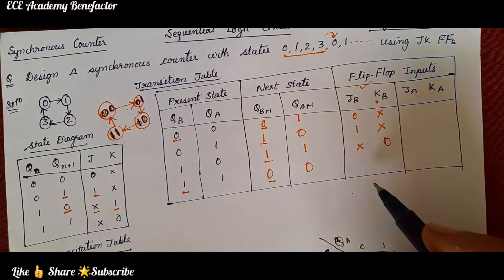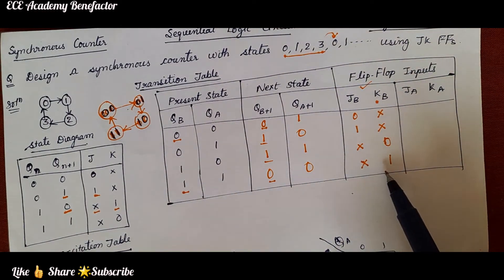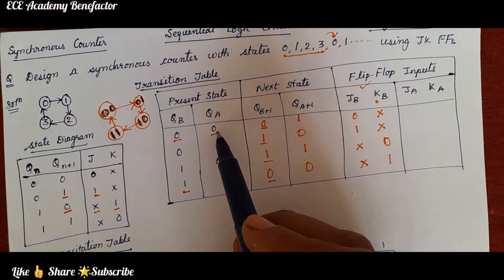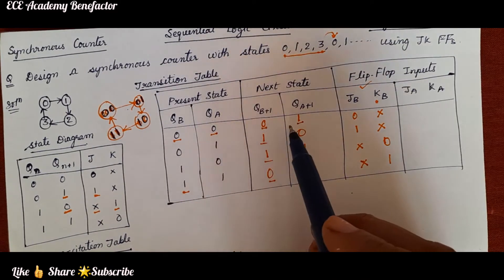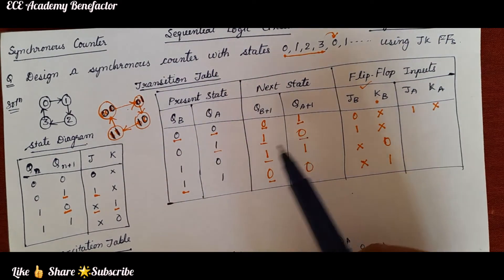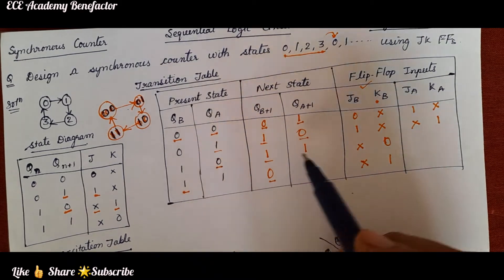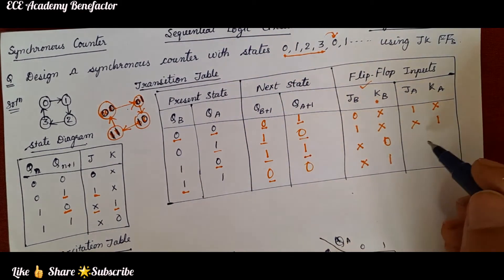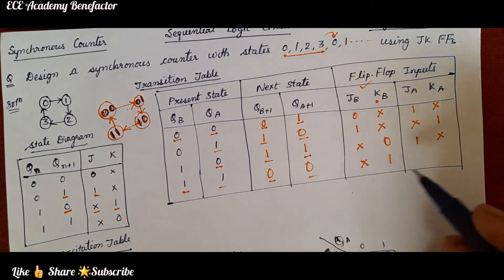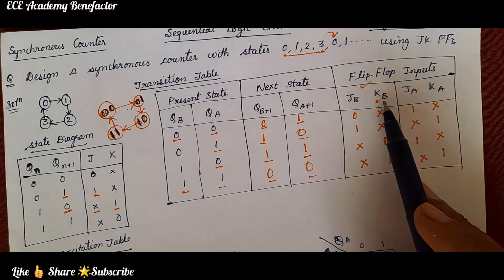For 10, what is JK? It is X1. Now look at JA and KA. Compare QA with QA+1. For QA=0, QA+1=1, it is 1X. Next is 10: for 10 it is X1. Next is 01: for 01 it is 1X. For 10, it will be X1. In this way we have filled the two columns JB, KB and JA, KA.